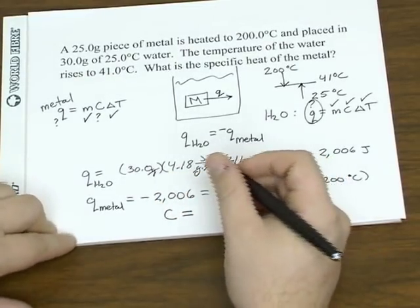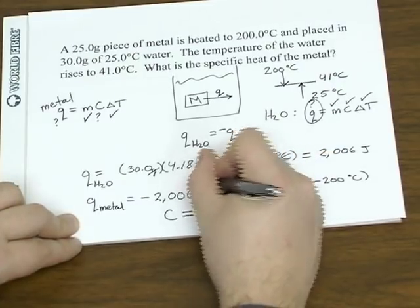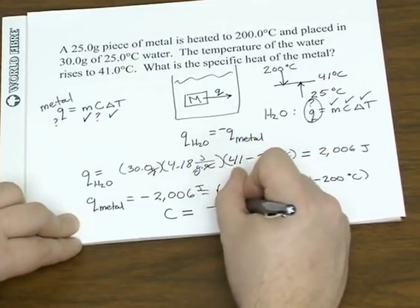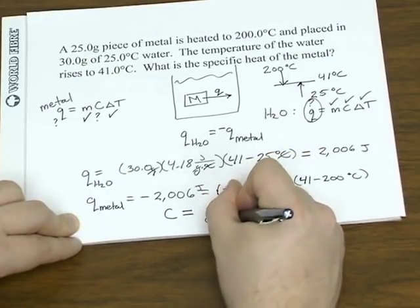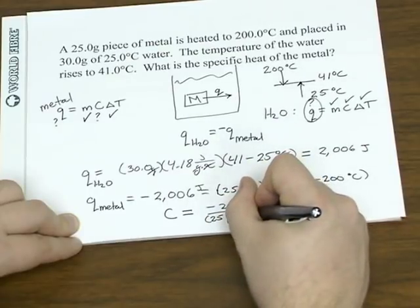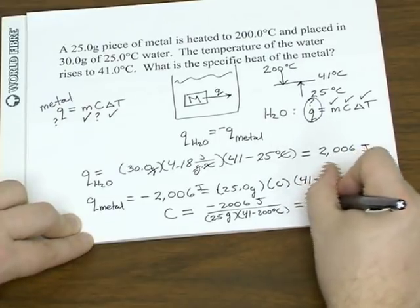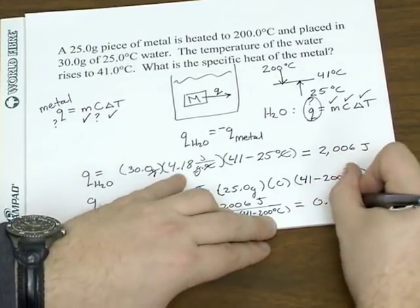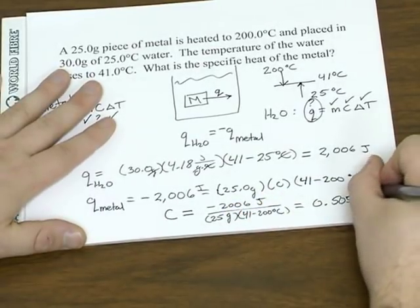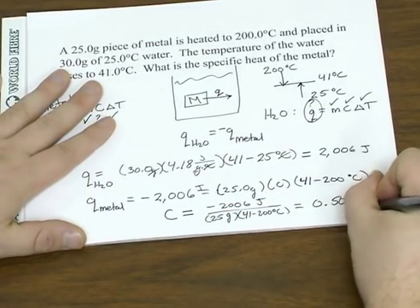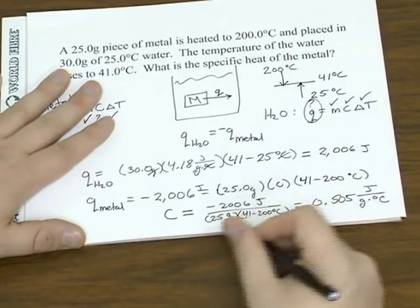So as we solve for C, that is 2,006 joules over 25 grams times 41 minus 200 degrees. That gives us 0.505, and unit-wise, that gives us the units for specific heat, joules over gram degree.